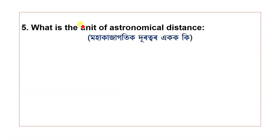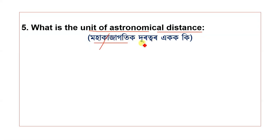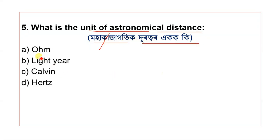Question 5: What is the unit of astronomical distance? The options include ohm, light, air, kelvin, and hertz. The term used is 'Mohajagotik' for the cosmic unit of astronomical distance.